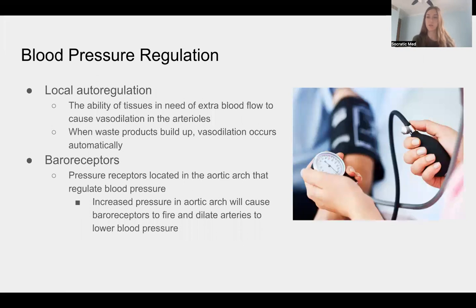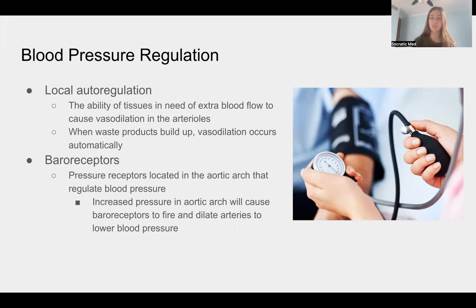Blood pressure can be regulated a few ways. There's local auto-regulation in the tissues: when tissues need extra blood flow and aren't getting enough oxygen, they produce waste products that build up and trigger automatic vasodilation, allowing greater blood flow to those tissues. We also have baroreceptors — pressure receptors in the aortic arch — that regulate blood pressure. If pressure is high there, baroreceptors increase their firing and dilate the arteries to lower blood pressure.